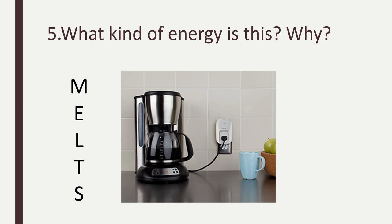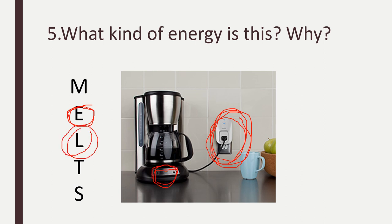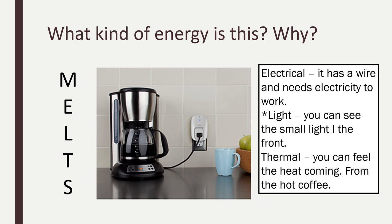What kind of energy is this? Why? There are different kinds of energy being demonstrated with this coffee maker. The first type is electrical energy — this coffee maker requires electrical energy in order to work. It also uses light energy so we can see that it's ready. And I know that this coffee maker will warm the coffee, so there is also thermal energy. So: electrical energy because it has a wire and needs electricity to work; light energy because of the small light in the front; and thermal energy because you can feel the heat from the hot coffee.